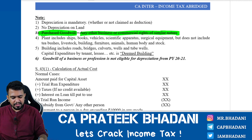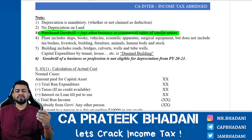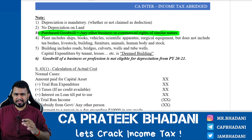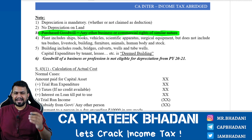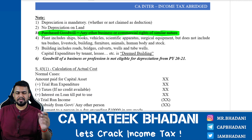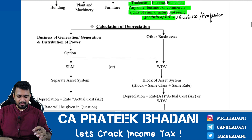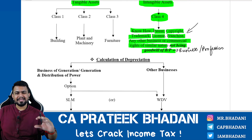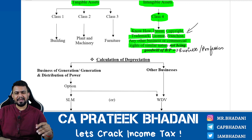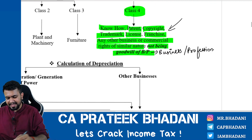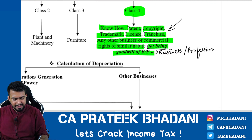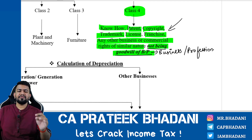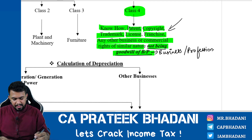Earlier, purchased goodwill was considered as any other business or commercial right of similar nature and depreciation was claimed on it. So many people were reducing their tax liability by claiming huge amounts of depreciation on goodwill, causing government revenue loss. The rationale is that as a business grows, its goodwill only grows — it does not diminish. Goodwill appreciates over time, so it is not a depreciable asset. That is why intangible assets now exclude goodwill of a business or profession.